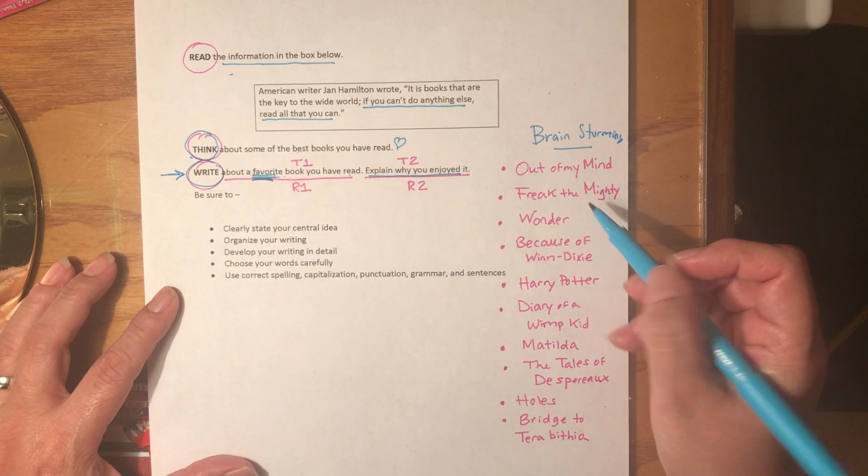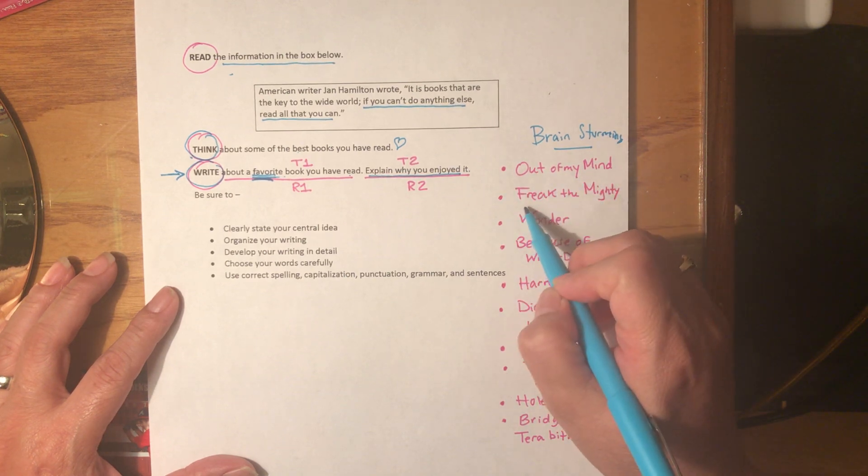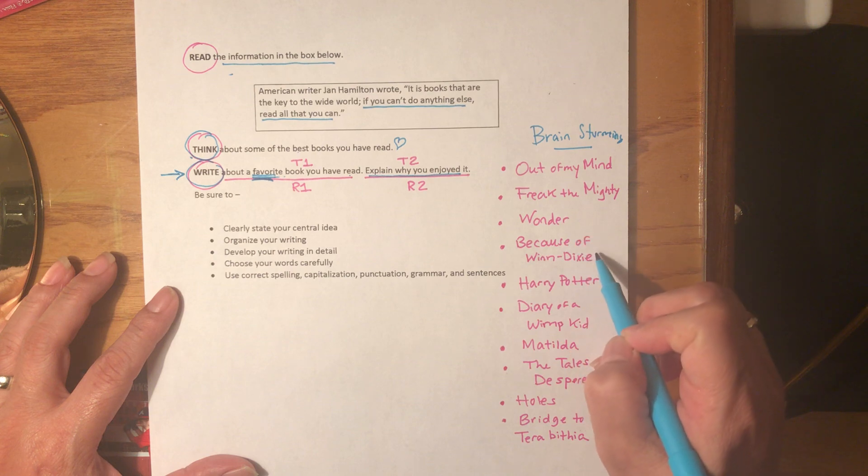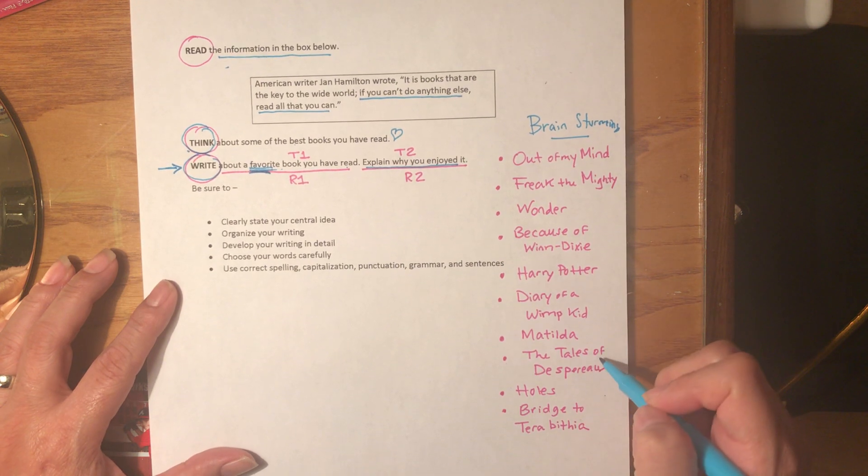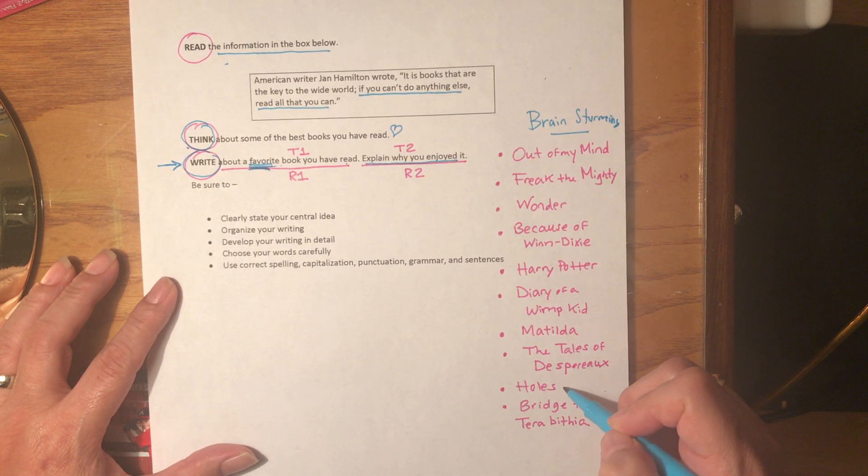Don't go with the first book that you selected. Freak the Mighty, Wonder, Because of Winn-Dixie, Harry Potter, Diary of a Wimpy Kid, Matilda, The Tale of Despereaux, Holes, Bridge to Terabithia.